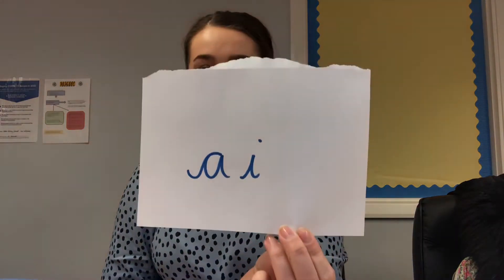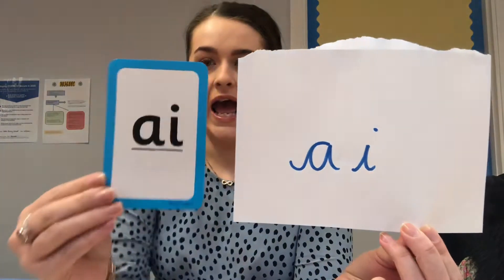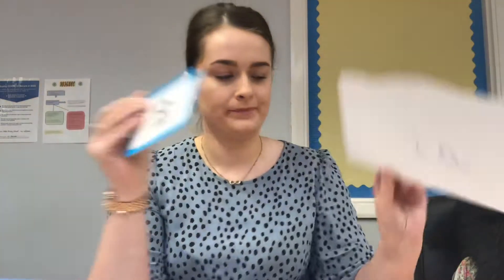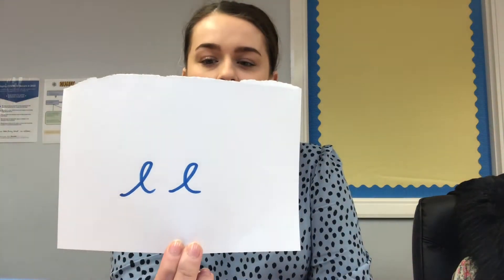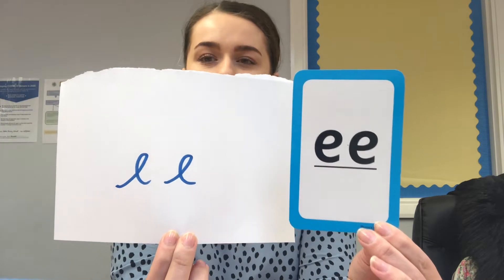Hi everyone, so today is recap day for phonics — all of those phonics that we did last week. So we have 'a' — that's how you see it written in our nice handwriting, and that is how you see it in a book. Then we have 'e' — that's how you would write it, and that's how you will see it in a book.